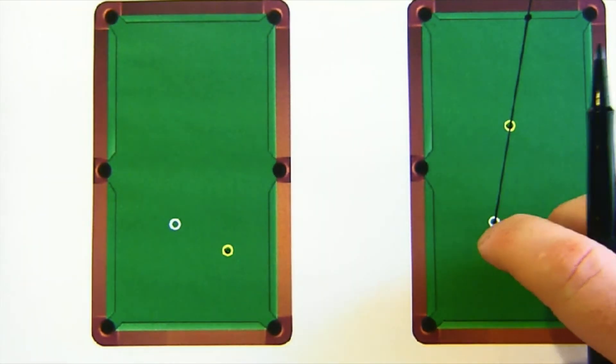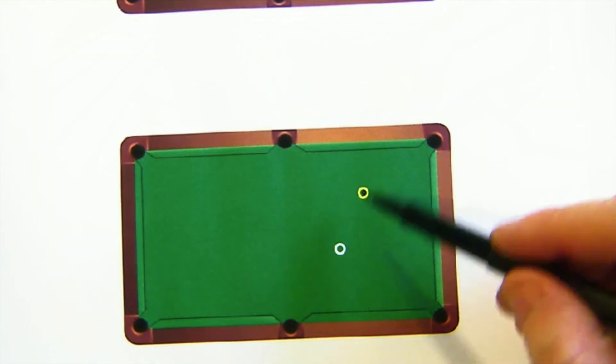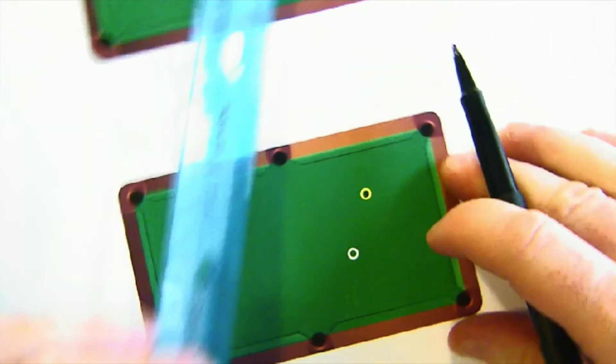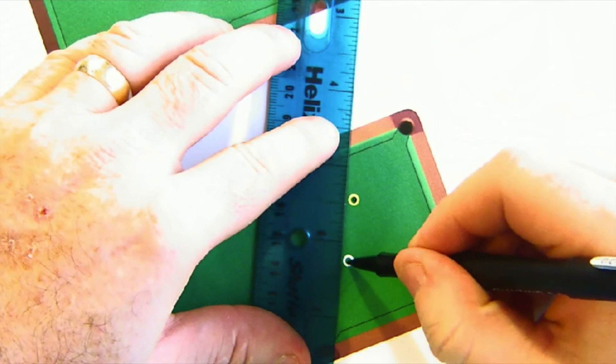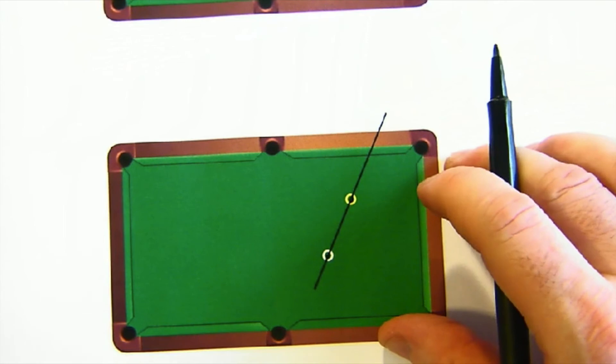So that's a reflection using our patty paper. Now you could use your standard construction tools if you want to create the perpendicular bisector or reflect it over and draw it but in my case I like patty paper. Let me do one more example here for you. So here's our white ball, our nine ball. I'm going to try and bank it and then see if it goes in this pocket.